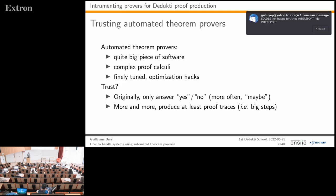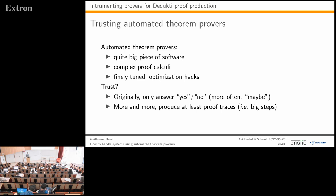As I said, it is hard to trust automated theorem provers because they are quite large pieces of software with complex proof calculi and finely-tuned optimization hacks. Originally such provers only answered yes or no—more often maybe, since they are not complete—but more and more they produce proof traces listing the big inference steps performed.